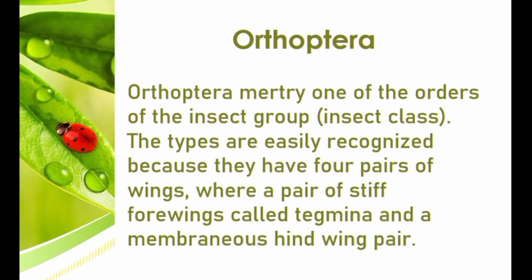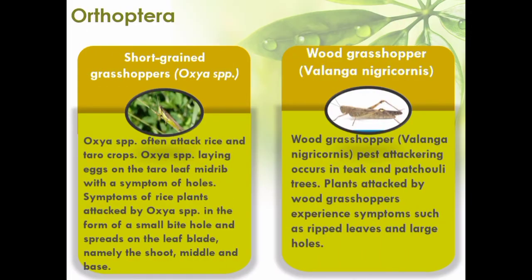Short-horned grasshoppers, Oxya spp., often attack rice and taro crops. Oxya spp. laying eggs on taro leaves may cause a symptom of hulling. Symptoms of rice plants attacked by Oxya spp. are in the form of small bite marks, hulling, and spurs on the leaf plate at the short, middle, and base portions.